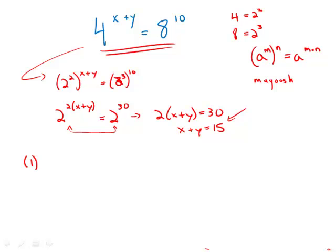Statement number 1 tells us that x minus y is 9. It certainly is possible there are some numbers that have a difference of 9 and a sum of 15, and there are others that have a difference of 9 and do not add up to 15. So knowing this, we have no way of knowing whether x plus y is 15. This by itself is insufficient.